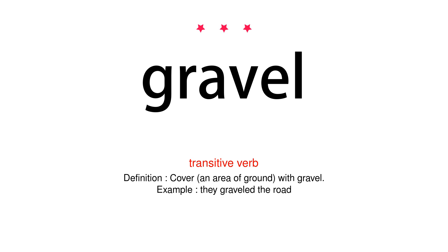Transitive Verb. Definition: Cover with gravel. Example: They graveled the road.